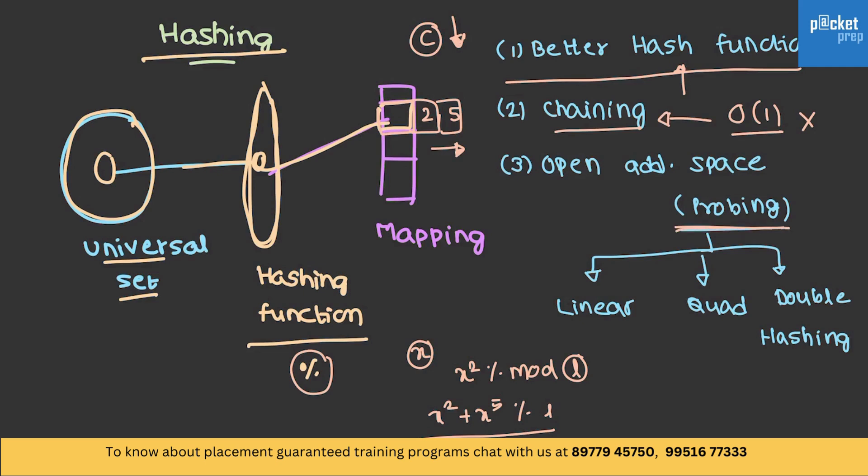In the case of probing, we can shift the position based upon the linear probing, quad probing or double hashing. If we encounter a collision, then we can actually perform another hash function and we can actually allocate another position to that particular number. Or, we can actually move the position to the next element in case of linear probing.